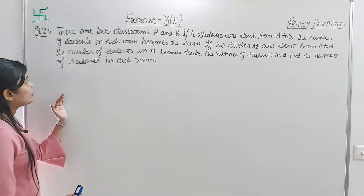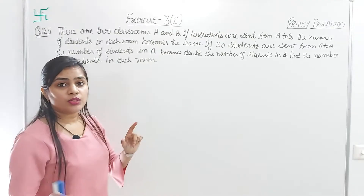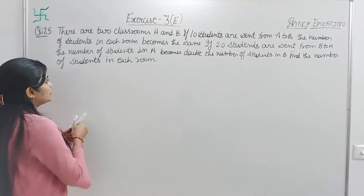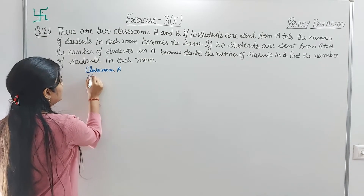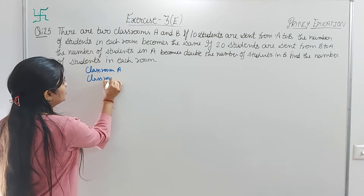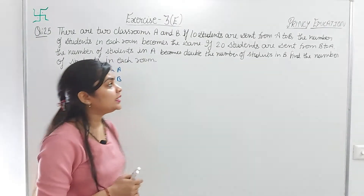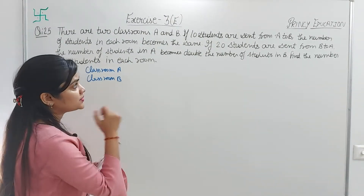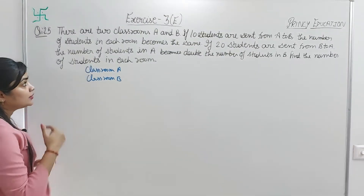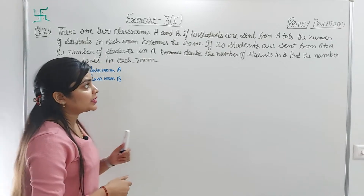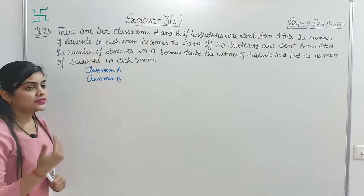Question number 25: There are two classrooms, A and B. If 10 students are sent from A to B, the number of students in each room becomes the same. If 20 students are sent from B to A, the number of students in A becomes double the students in B. Find the number of students in each room.